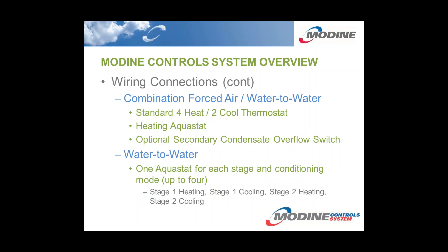Combination forced air and water-to-water systems are very similar. They use a standard four heat to cool thermostat as well as a heating aquastat to control the hydronic tank. Water-to-water systems will use one aquastat or contact for each stage and conditioning mode, so you could potentially have up to four aquastats on the system.